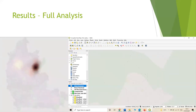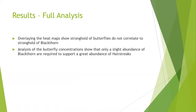When these maps were overlaid, you can see that there's actually quite a poor correlation between where the butterflies are localised and where the blackthorn is localised. The overlay shows that stronghold butterflies do not necessarily correlate with the strongest localisation of the blackthorn. The analysis of butterfly concentrations shows that only a slight abundance of blackthorn is required to support a great abundance of the hairstreaks.